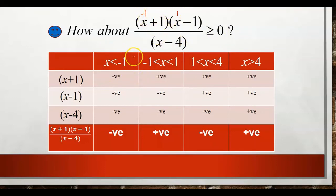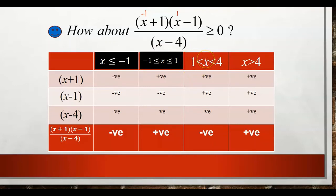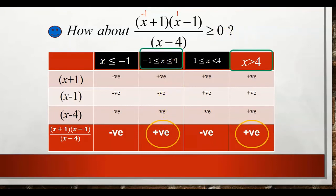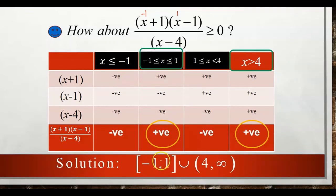We slightly modify the intervals to include the boundary points: x less than or equal to negative 1, and x from negative 1 to 1 with equal signs included. Choosing the positive portion plus the boundary points, the solution in interval form is [−1, 1] union (4, ∞), because x = 4 is still excluded as it makes the denominator zero.